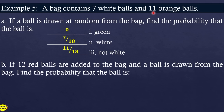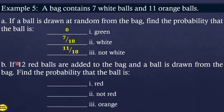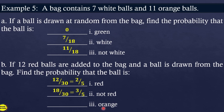If 12 red balls are added to the bag, the new total is 18 + 12 = 30, which becomes our new sample space. Find the probability that the ball is red: there are 12 red balls, so probability = 12 over 30, which simplifies to 2/5. How about not red? Not red means white and orange, which is 7 + 11 = 18, so probability = 18 over 30 = 3/5. And the probability of drawing an orange ball is 11 over 30.